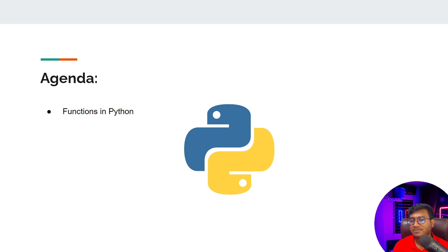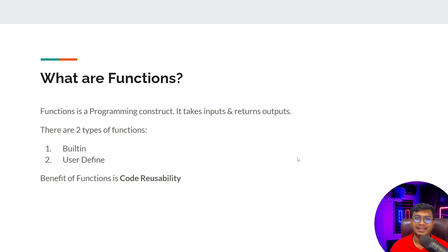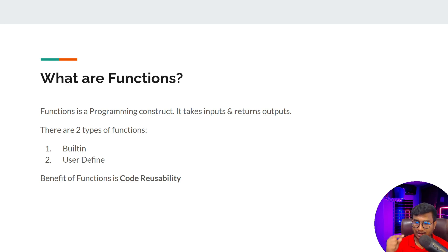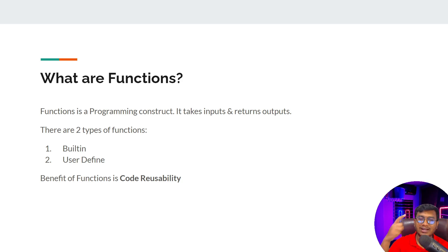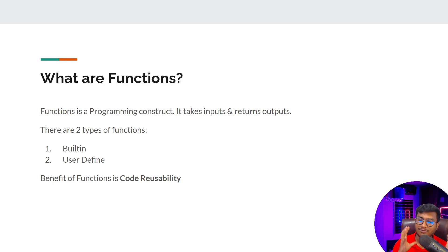Functions are nothing but a programming construct — they take inputs and return outputs. We've already seen this with built-in functions: the print function takes an input message and shows you the output. Inside the function, what is happening you don't know — it's completely a black box. You are only giving the input and receiving the output. This is called a function.